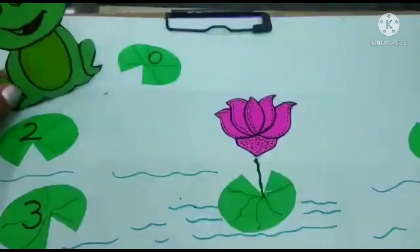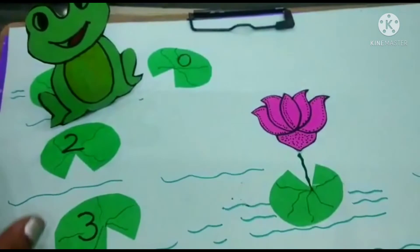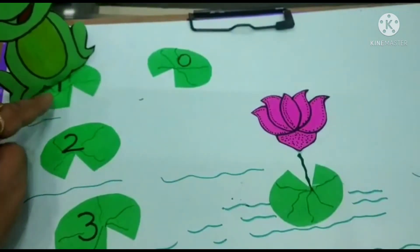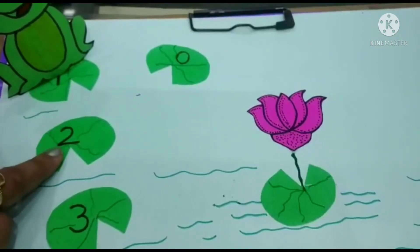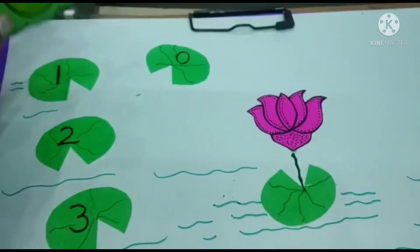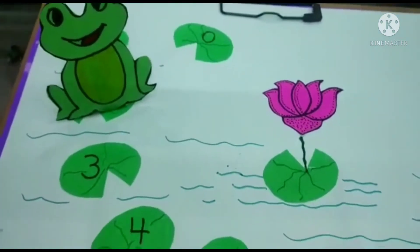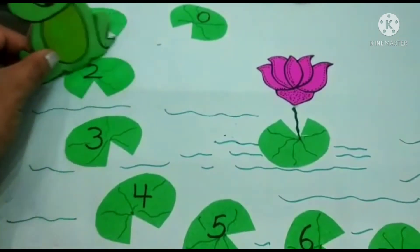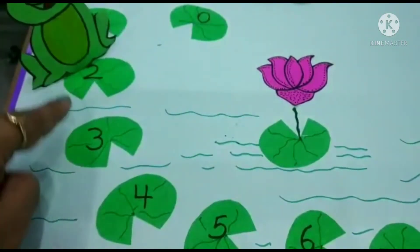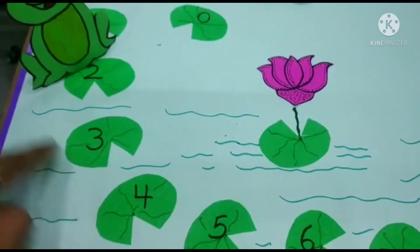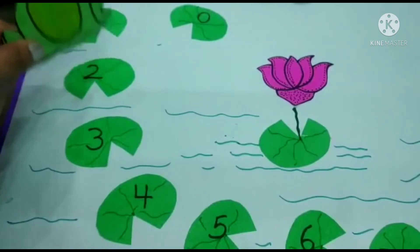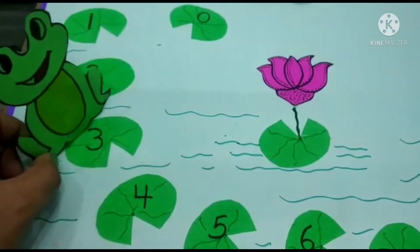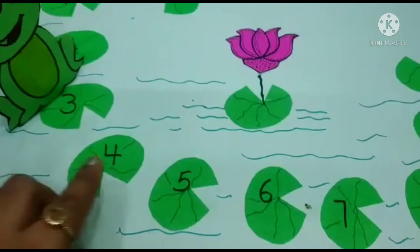He jumps on the number one leaf. Now, after one, tell me — which number is here so that he can jump? What comes after one? Two! After one comes two, so he now jumps on number two. Very nice! Now tell me, what comes after two? After two is number three, so he jumps on number three!